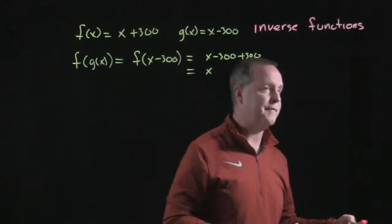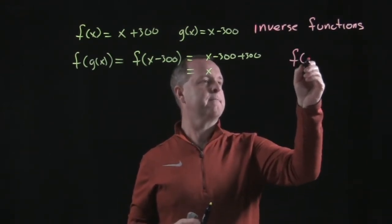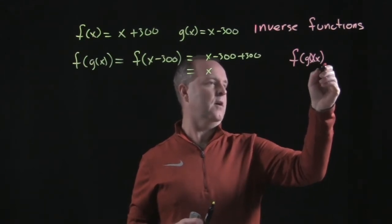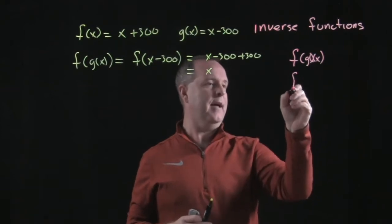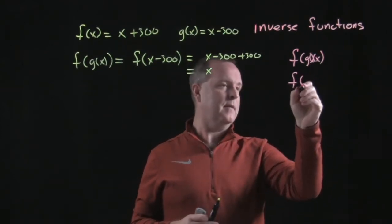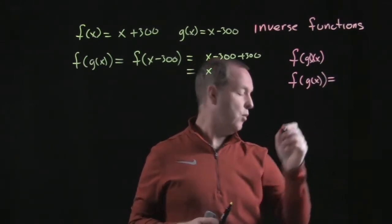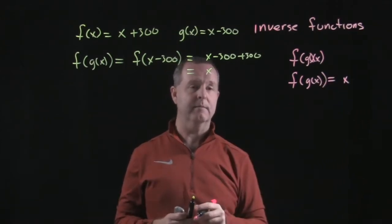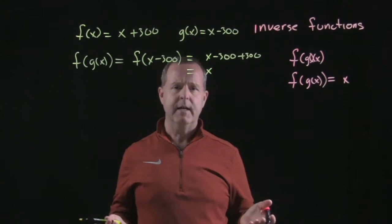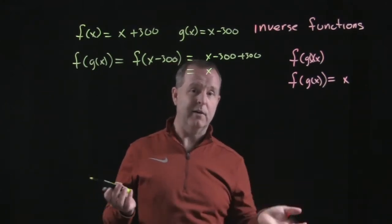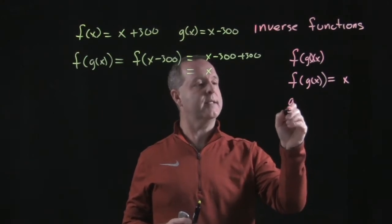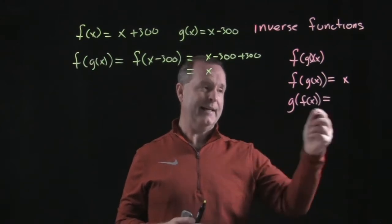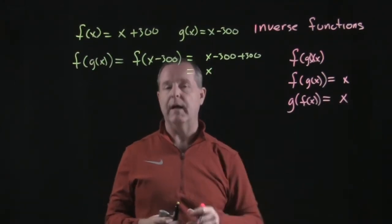To provide a definition: f of g of x equals x for all values in the domain of g. We also assume that if one function undoes another, the other undoes the first. So likewise, g of f of x equals x as well — that's also an inverse.